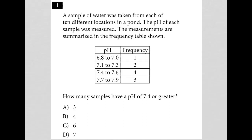So this question says, a sample of water was taken from each of 10 different locations in a pond. The pH of each sample was measured. The measurements are summarized in the frequency table shown.